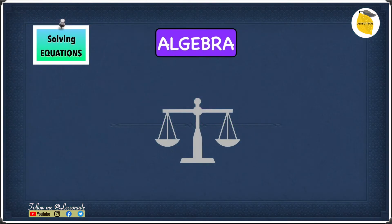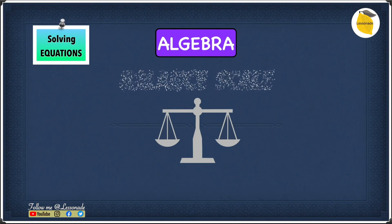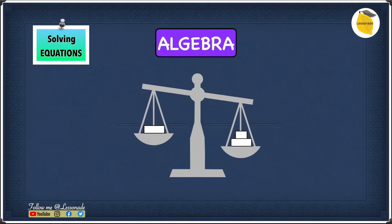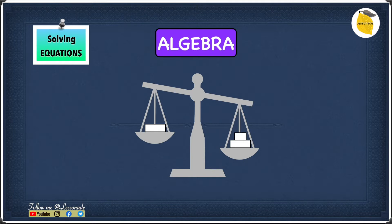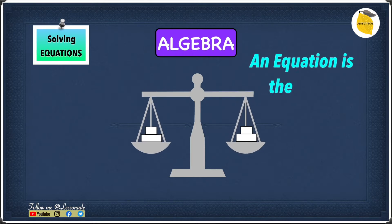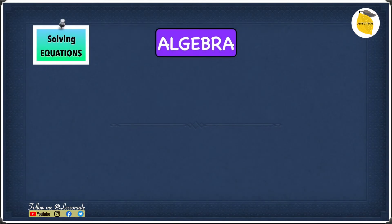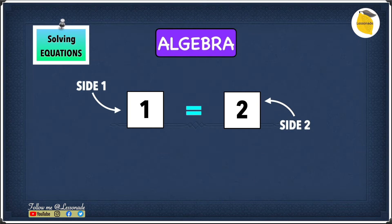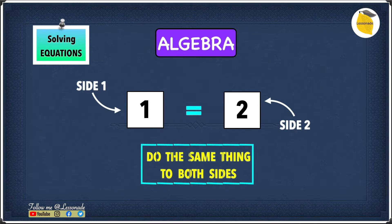An algebra equation is just like a balance scale. If you have more weight towards one side than the other, the balance scale will lean towards that side. But if you have the same number of weight on both sides, then the balance scale will be equal — and an equation is the same. To understand this, let's have a look at this diagram, which shows side 1 equals side 2. Both of these sides must be equal.